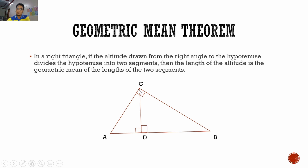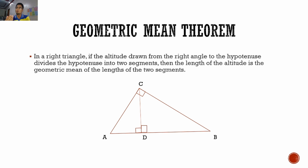The moment we draw an altitude from the right angle inside our right triangle, we get two more smaller right triangles. Our original right triangle ACB — the biggest one — now contains two smaller right triangles inside: CDA and CDB. Technically speaking, we now have three right triangles from drawing just one line. And those three right triangles are all similar to each other, meaning each has corresponding sides with the others.